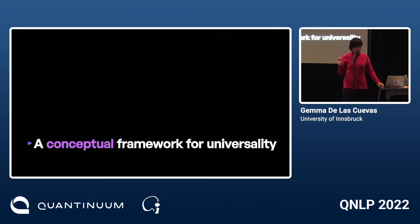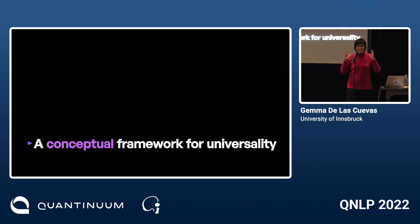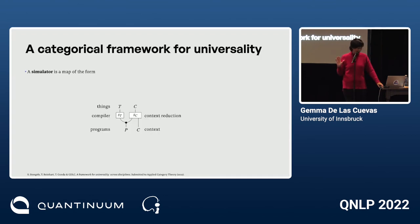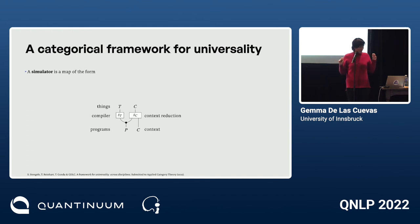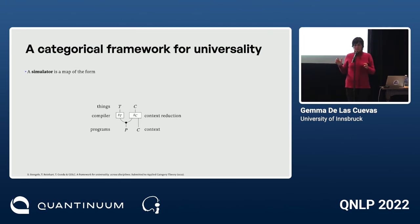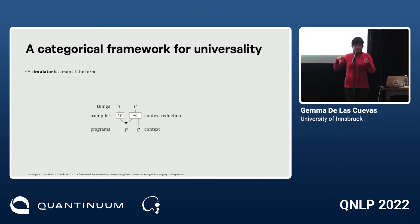Now comes the categorical framework. Our central object is what we call a simulator — a map from programs and contexts to things and contexts. It splits into two parts called a compiler and a context reduction, and there's also a map from things and contexts to behaviors.